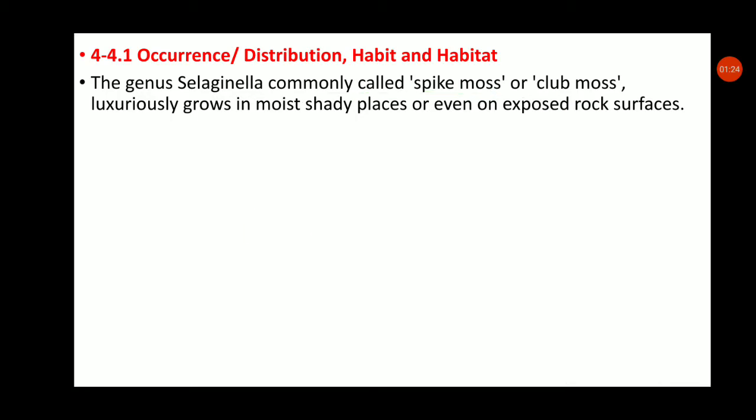These club mosses luxuriantly grow in moist shady places, or even on exposed rock surfaces. Selaginella mostly grows where moisture is plentiful and where there is shade, such as in large dense forests, but they also grow on rock surfaces.